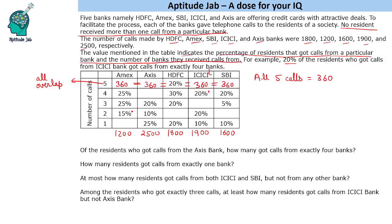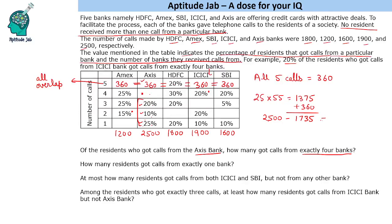The first question asks: of the residents who got calls from X's bank, how many got calls from exactly four banks? Looking at X's bank, 2500 people total. The given percentages are 30% plus 25% = 55%, and 56 × 25 gives approximately 1375 people. Adding 360 for all five calls gives 1735. Total people are 2500, out of which 1735 have been categorized, so what remains is 765.